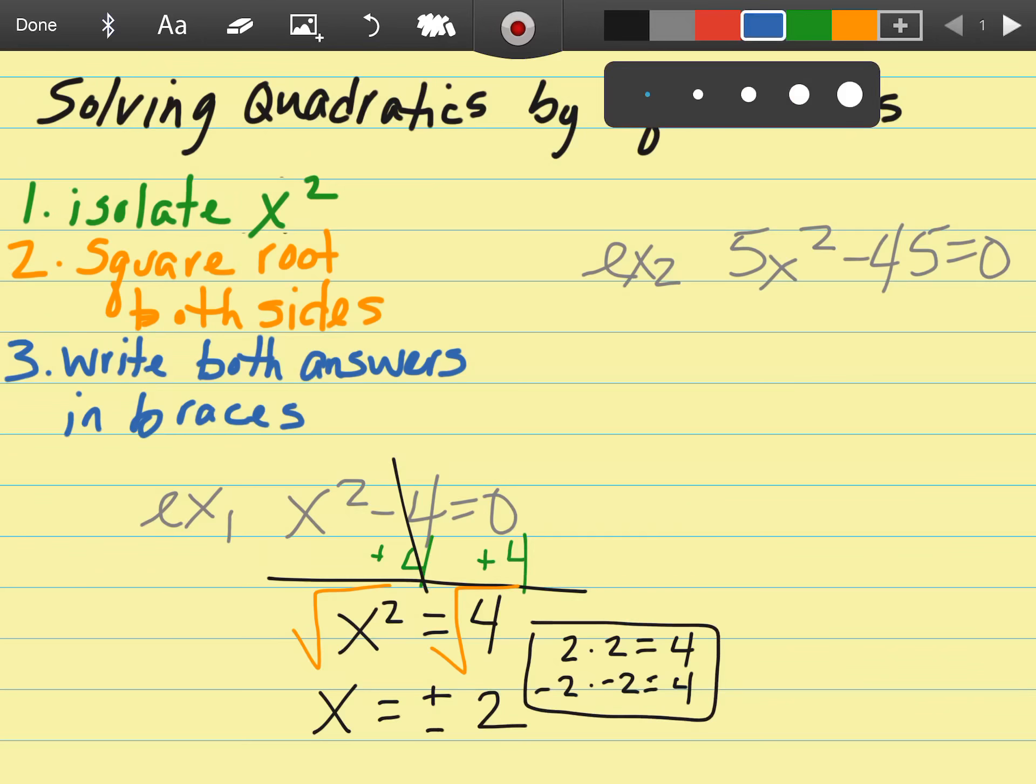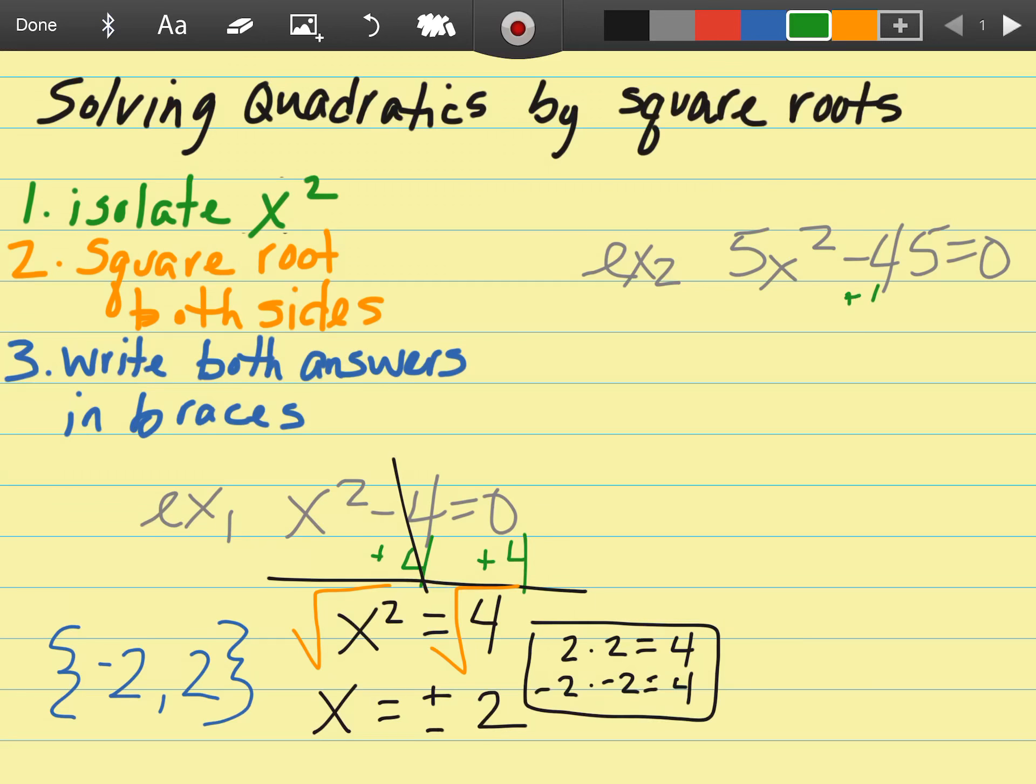When I write my final answer in the braces it will look like negative two comma two. Example two: there's going to be a little bit more work to isolate the x squared term. Starting with the addition first, I'm going to add this 45 to both sides. I'm going to bring down the 5x squared, zero plus 45 is 45.